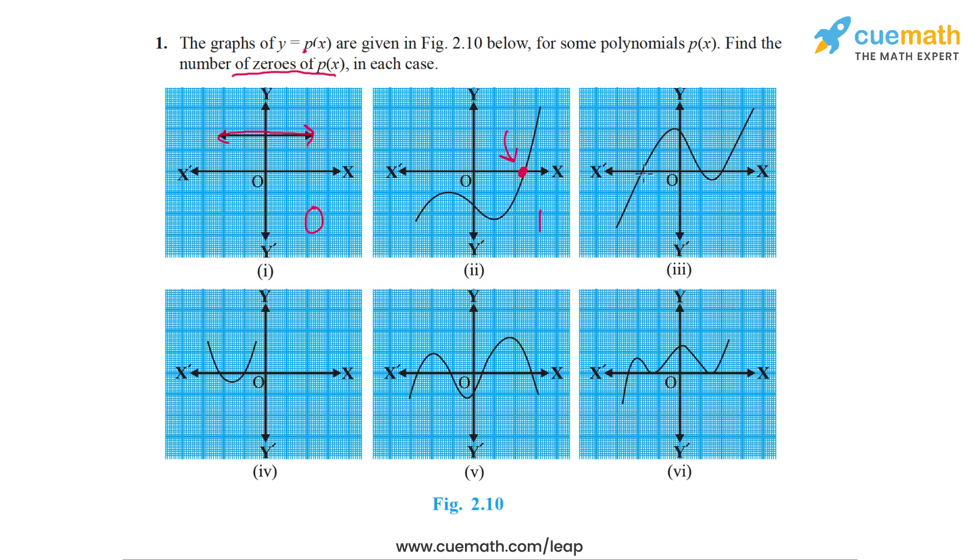In the third part, the graph crosses the x-axis here, zero 1, then here, which is zero 2, and then here, which is zero 3. So the graph crosses the x-axis three times, which means that this polynomial has three zeros.